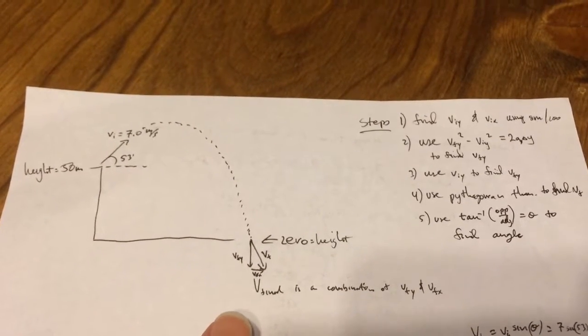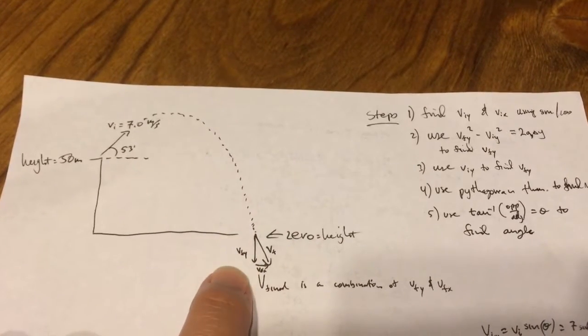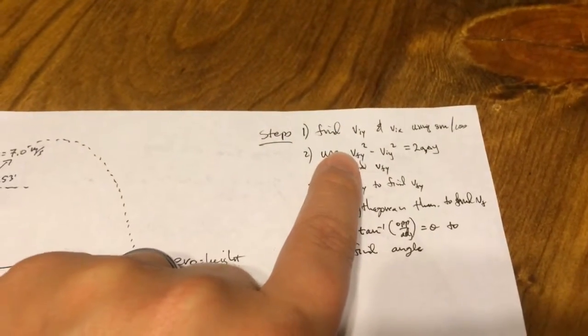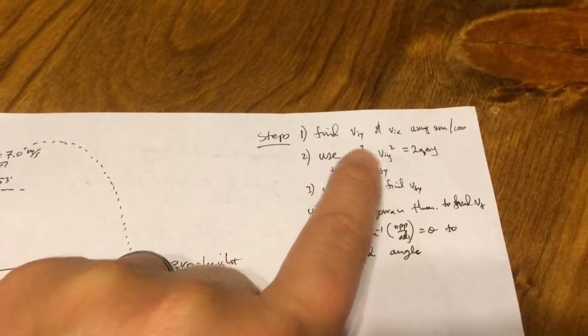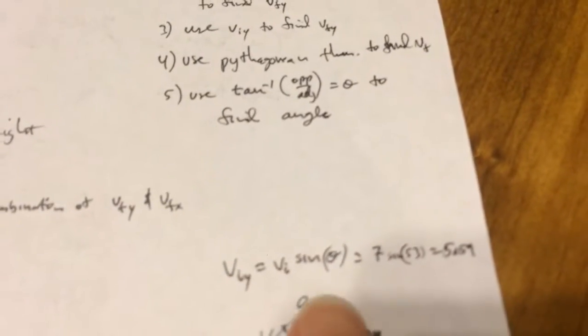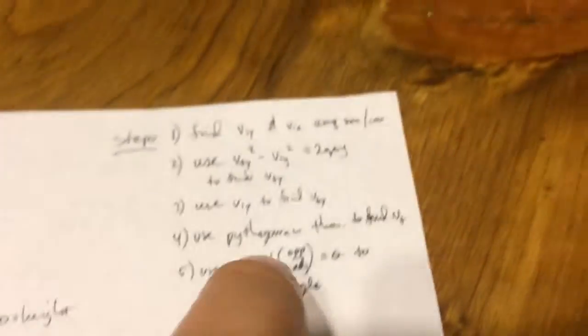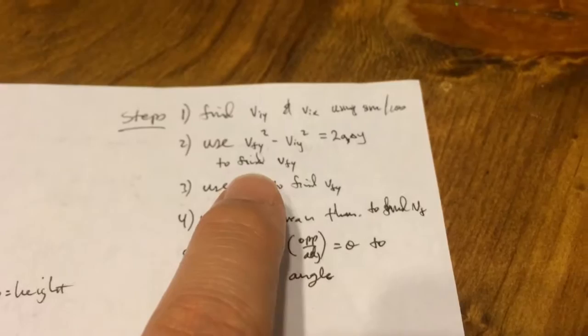And in order to do that, you need to know the final in the x direction and the v final in the y direction. So to do that, first thing: know the initial in the y and x. You do that using sine and cosine. All right, looks like this here for the y. Then you're going to want to use this equation.